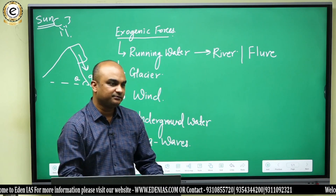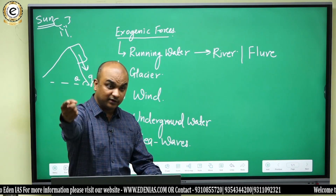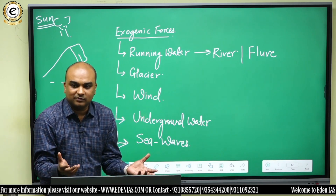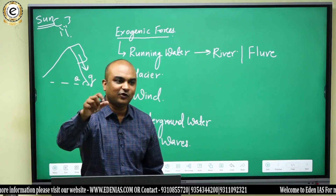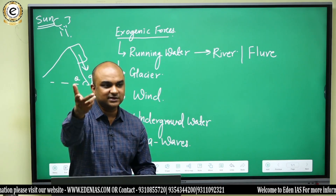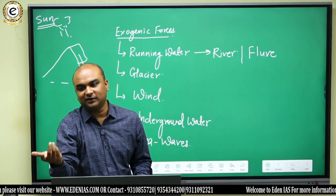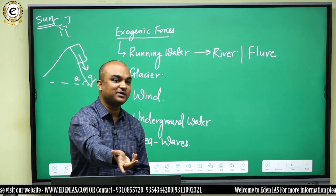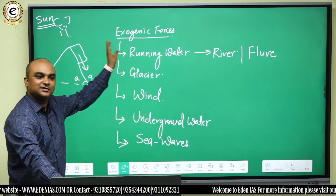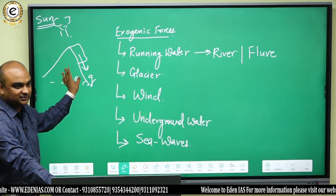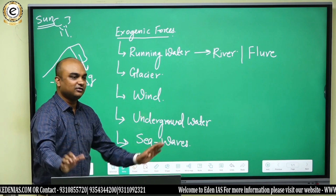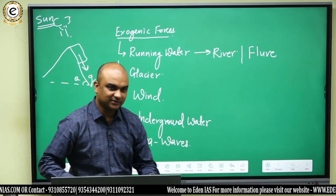As the glacier moves down it eats up the slope and reduces it over a period of time. This glacier was formed due to snowfall, snowfall from clouds, clouds from condensation, condensation from evaporation, and evaporation caused by the sun — so the ultimate source of energy for glaciers is also the sun.